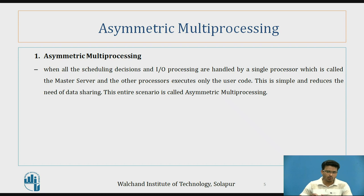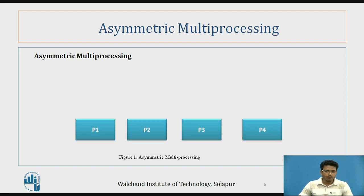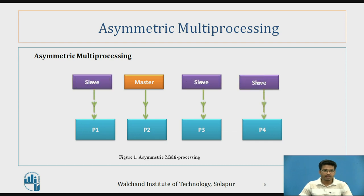Each system has its own data and executes its own code. In this diagram, we have processes P1, P2, P3, and P4. There is one master process that manages the slave processes — while executing different processes, the master process first schedules all the processor tasks, and then only the process is executed.